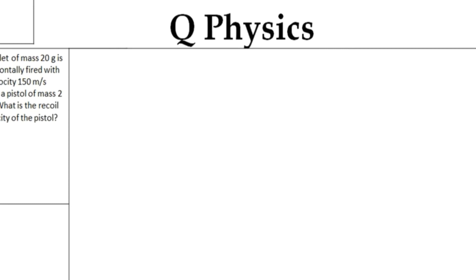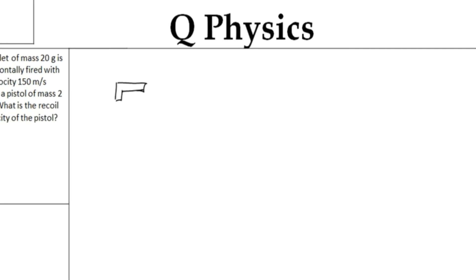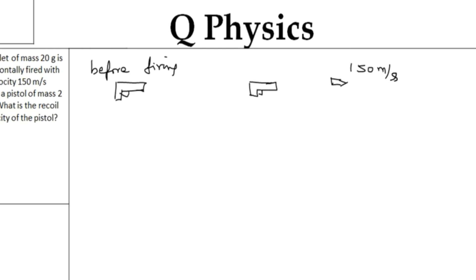I am going to take a pistol — this is the pistol before firing, and after I fired the bullet from the pistol, the bullet is moving with a speed of 150 meters per second. This is before firing, and this is after fired.